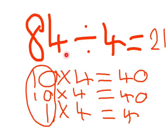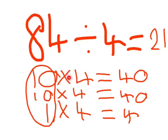Today I am going to explain how to do 84 divided by 4. First you have to do 10 times 4 which equals 40.